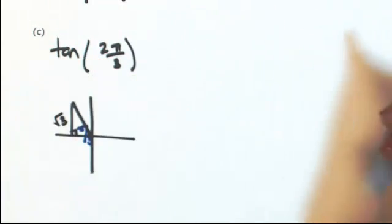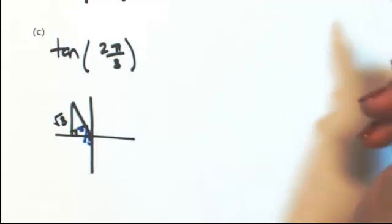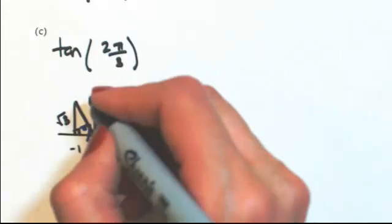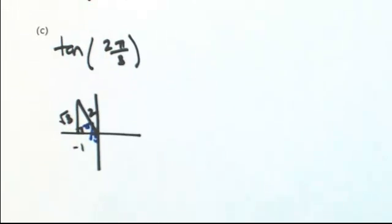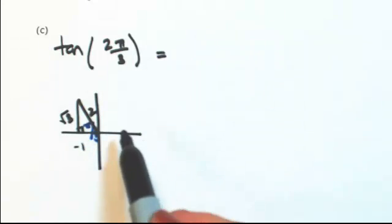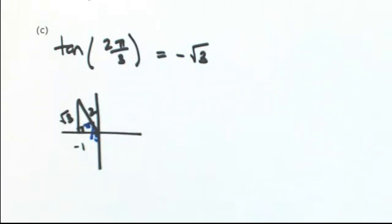The adjacent is 1, because it's in the second quadrant would be negative 1. Hypotenuse is always positive 2 in this case. So from my triangle, I can find the tangent is opposite over adjacent. So the opposite over adjacent, so negative square root of 3.